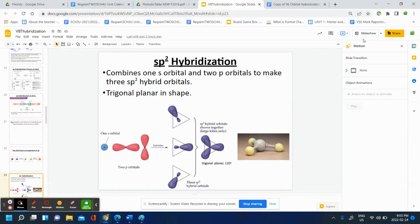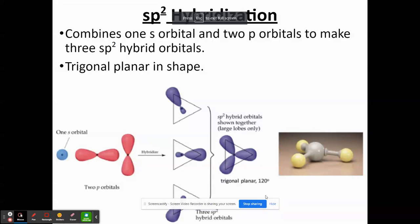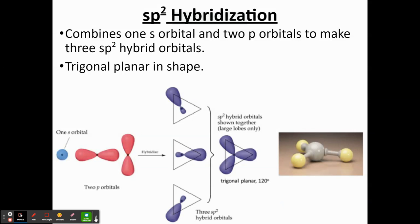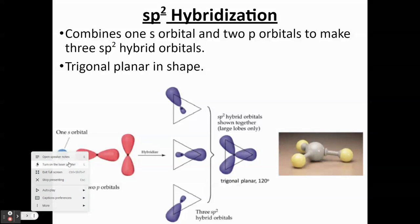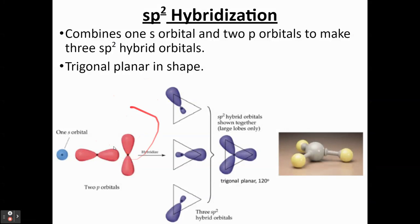You should also understand SP2 hybridization. So there's some great examples to practice in this little slide deck here. But essentially, that's where you have an S and then two P orbitals come together, and it makes these three orbitals here. These are called SP2 orbitals. When you connect them together, they look like this, and that gives you the 120-degree bond angle that you see with things that are SP2 hybridized.